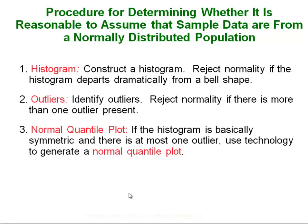There are three things you are looking for when determining normality. The first thing you should always do is construct a histogram — it is very easy to do and the shape gives you a good idea of what is going on. You are looking for a shape close to the normal curve: one peak in the middle that tapers out fairly evenly on both sides. You are also looking for outliers, which you can normally see with a histogram or a box and whisker plot.